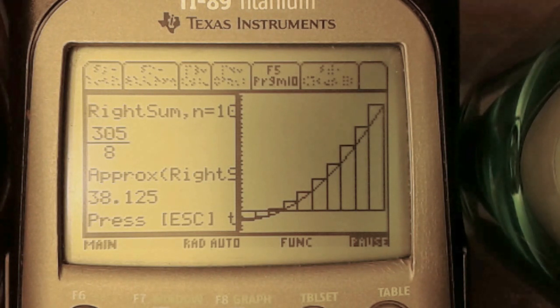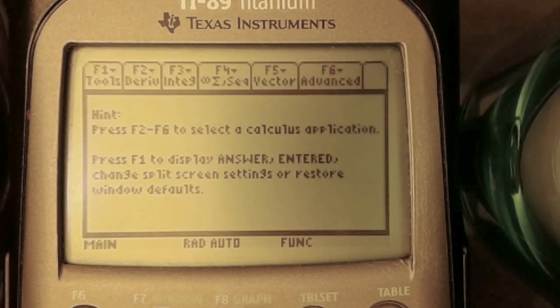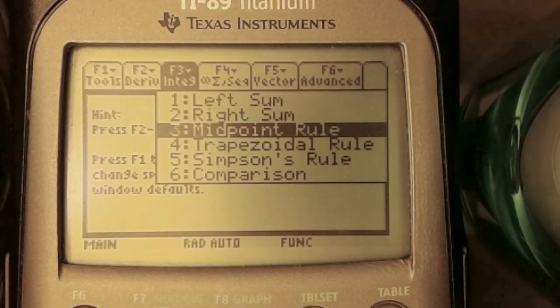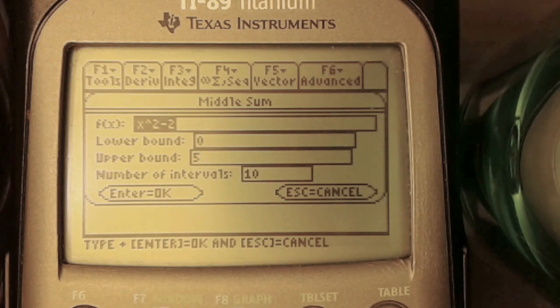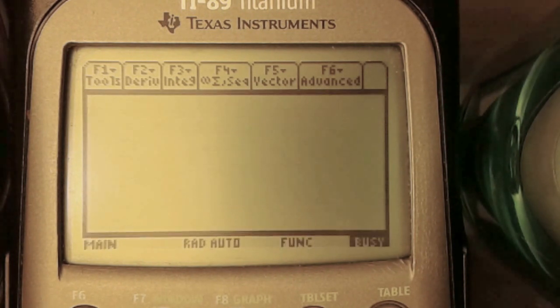How can we get a more or less exact area under the curve? We can use what's called the midpoint sum, or midpoint rule. Same function, same bounds, same partition. Let's see what we get.